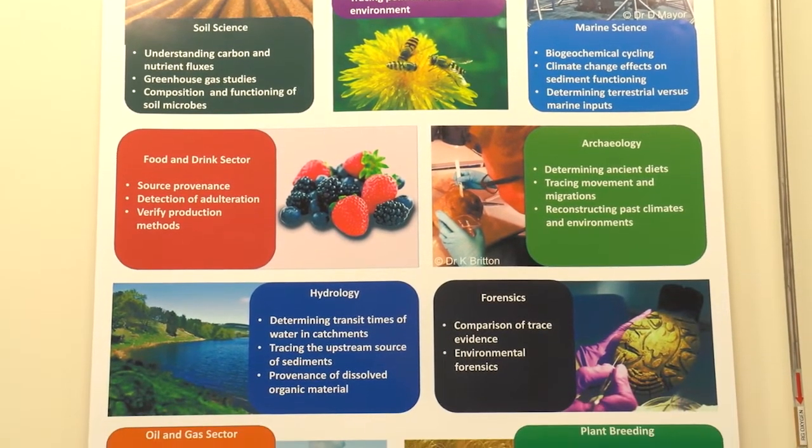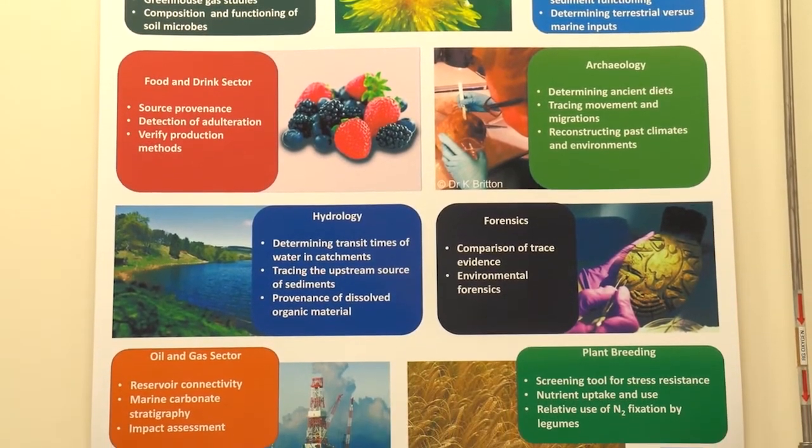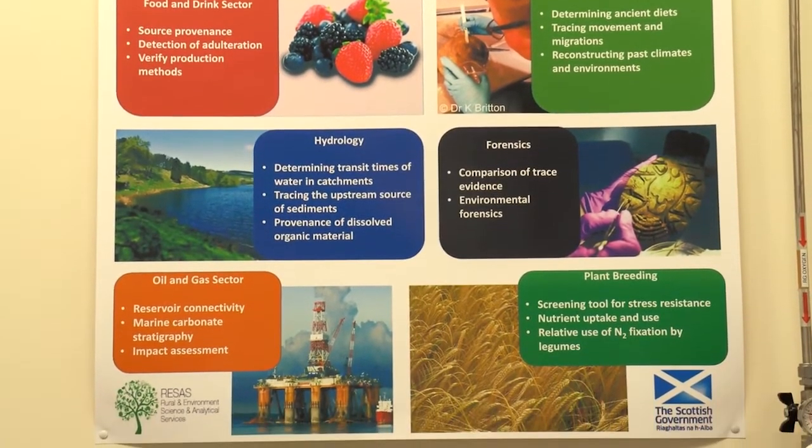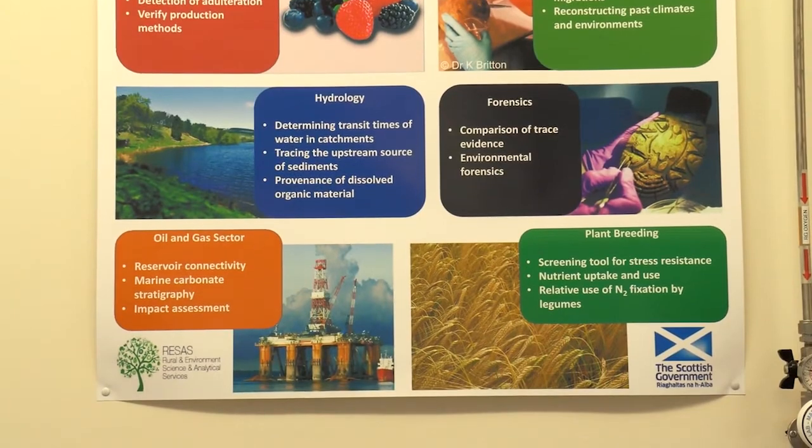Stable isotopes differ at global scales and at landscape scales, so they've got a lot of geographical information tied up in them, and we can use that information to say where food is produced, and therefore we can protect premium products such as Scotch beef or Orkney cheese, for example.